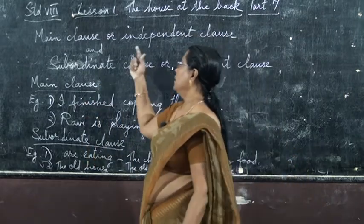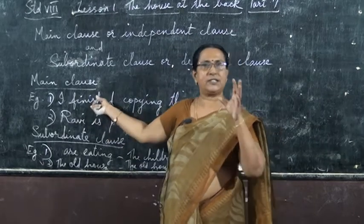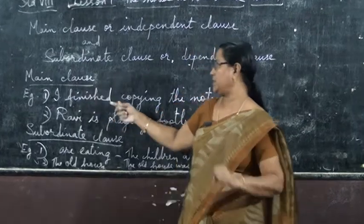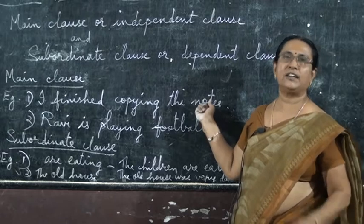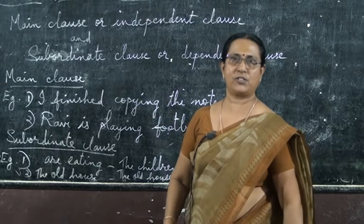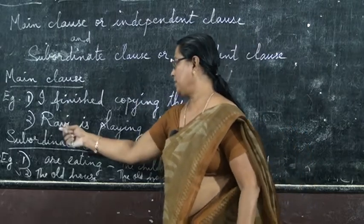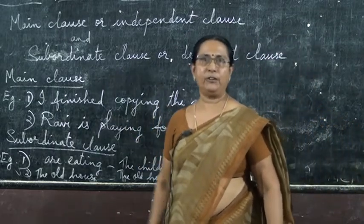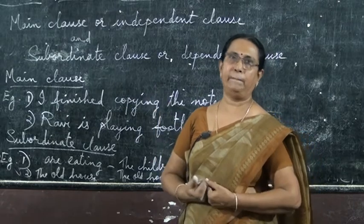For example, look at the main clause. A main clause gives you a complete meaning. For example, 'I finished copying the notes' — that is a complete sentence, you can understand it fully. Second example: 'Ravi is playing football' — that also has a complete meaning and is a complete sentence.